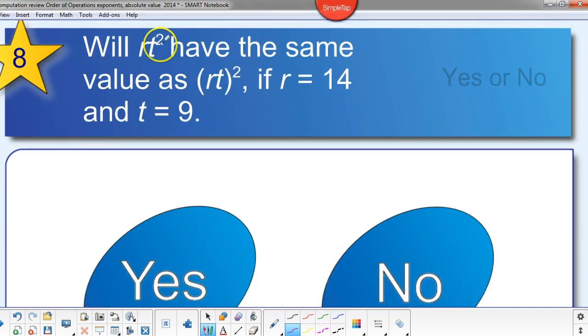RT squared. Will RT squared have the same value as RT squared if R is fourteen and T is nine? That's correct. The answer is no. It will not. Because this first one, we're squaring only the T, only the nine. So it would be fourteen times nine squared, or fourteen times eighty-one.